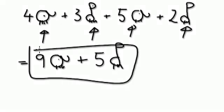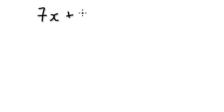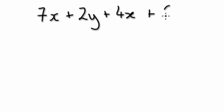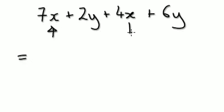So this is a lot neater. For example, let's say seven x plus two y plus four x plus six y. What does this simplify to? Well, you've got x here and x here, so let's just merge the two and say you've got eleven x.